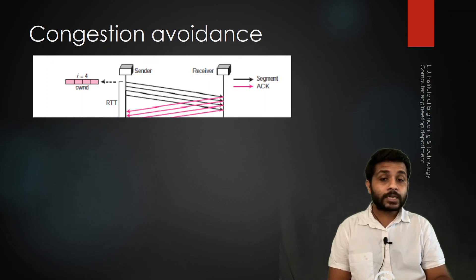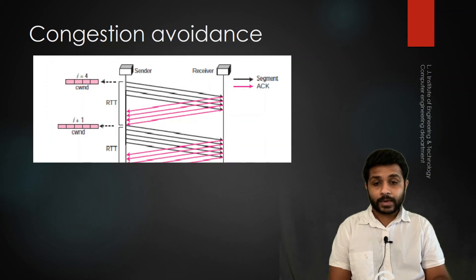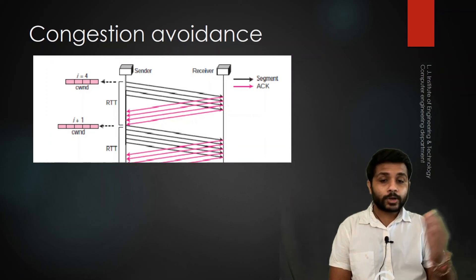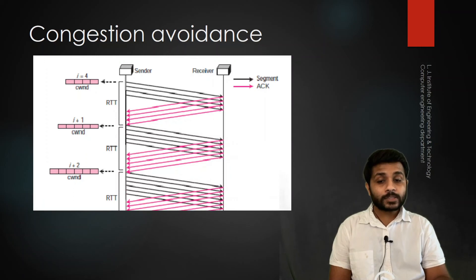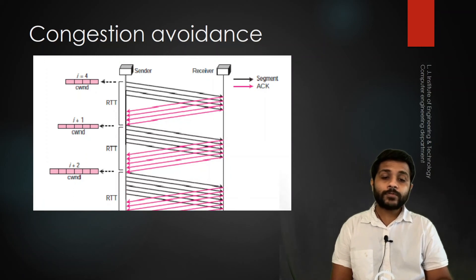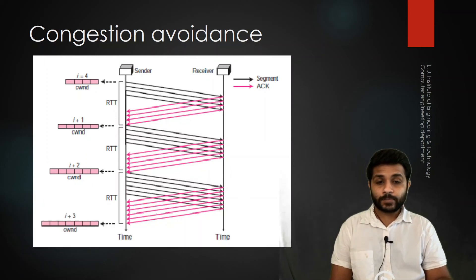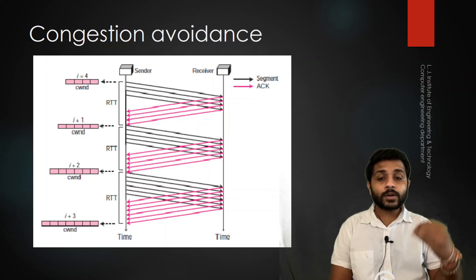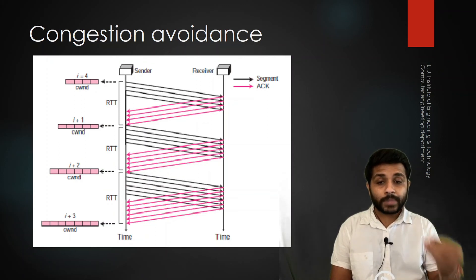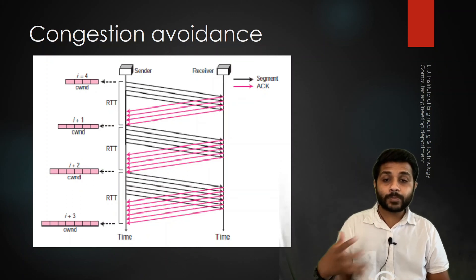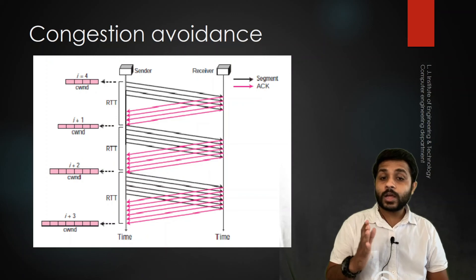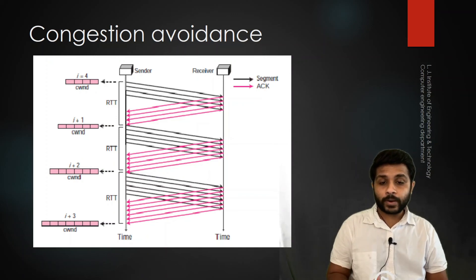In Congestion Avoidance, the sender will first send 4 packets; after receiving acknowledgement, it sends 5 packets; after acknowledgement for those, it sends 6 packets; then 7 packets. The increment of packets is one, which is different from Slow Start. In Slow Start, packets were sent exponentially, but in Congestion Avoidance, packets are sent one by one, incrementing linearly.